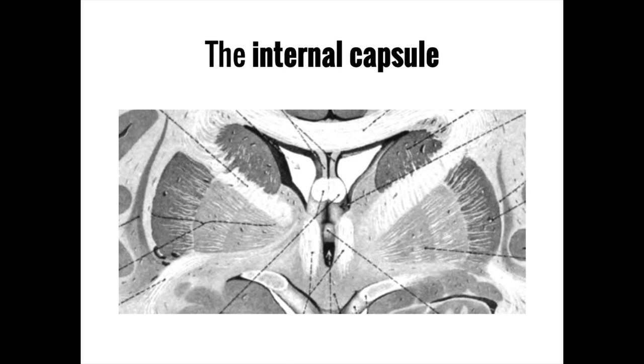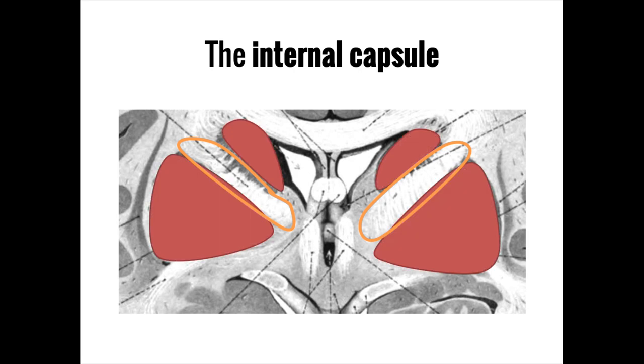Let's zoom in to look at the internal capsule more closely. The internal capsule is named because it runs inside of some important surrounding structures, including parts of the basal ganglia, such as the caudate, putamen, and globus pallidus.